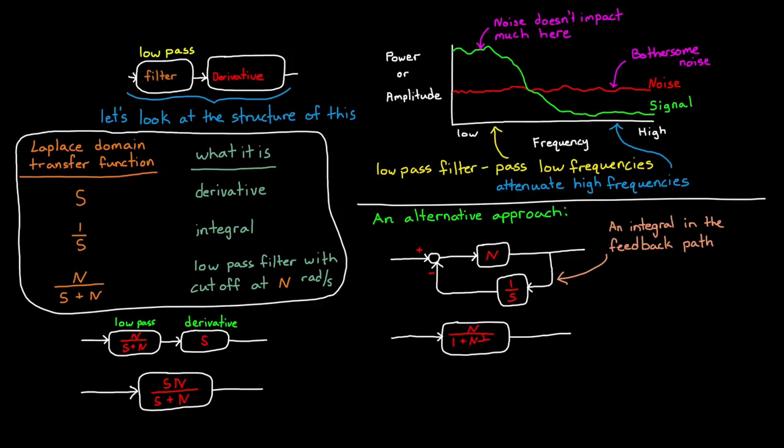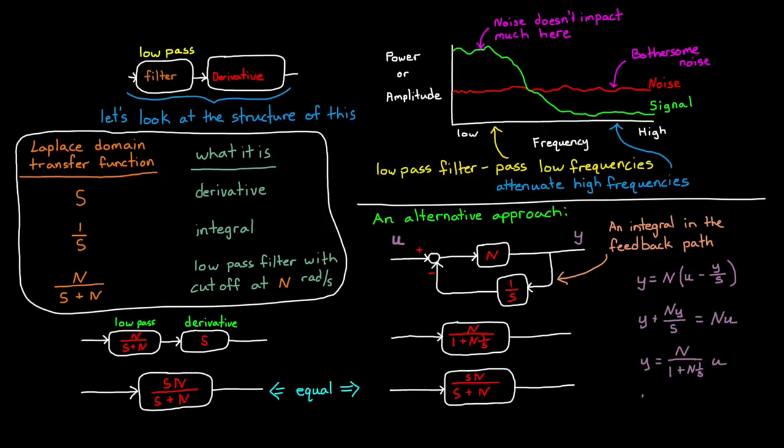n over 1 plus n times 1 over s. And then move the s around to get s times n over s plus n, which is exactly equal to what we had before. If you're not familiar with block diagram reduction or how we went from the feedback system to a transfer function, n over 1 plus n times 1 over s, I'll quickly go through an algebraic derivation that you can walk through on your own if you pause this video.